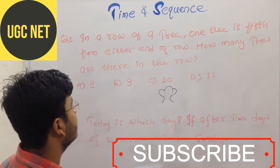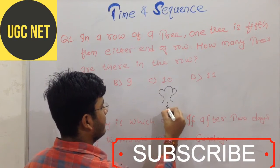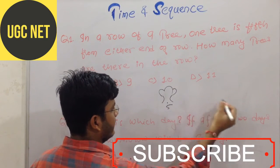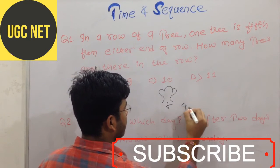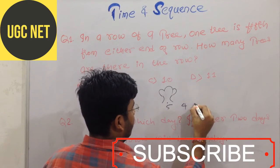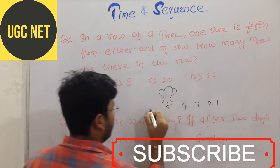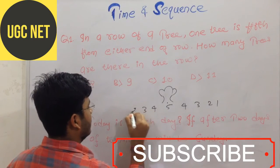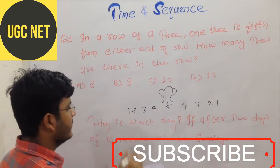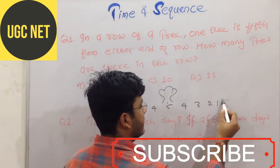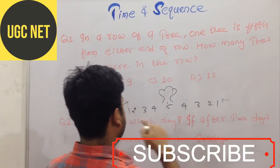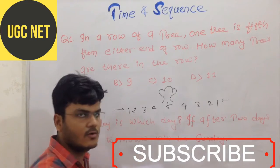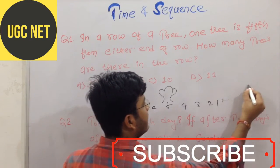so total how many trees are in a row? If it is in fifth row from every end of the row means 5, 4, 3, 2, 1 and 5, 4, 3, 2, 1. Because it is left side and if it is right side according to me, then from every side it is fifth. So total there are 9 trees.